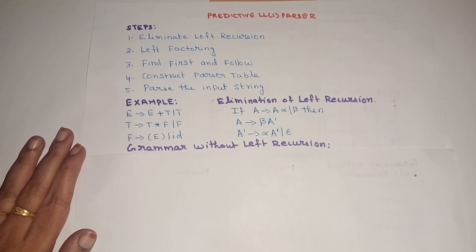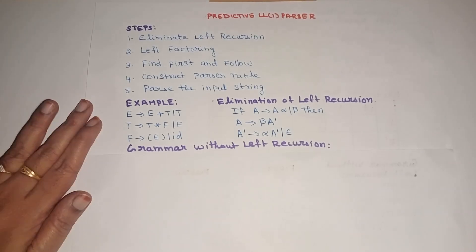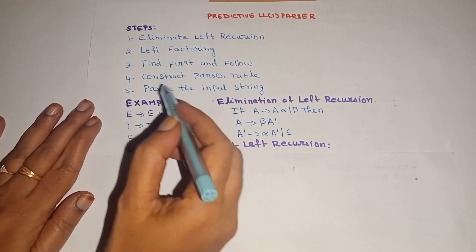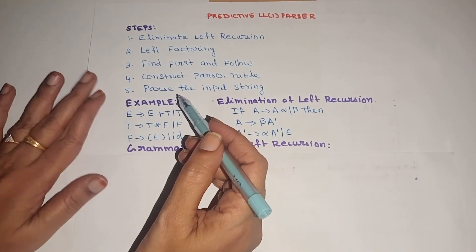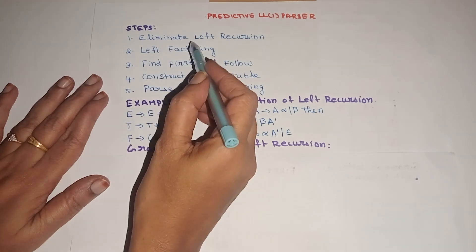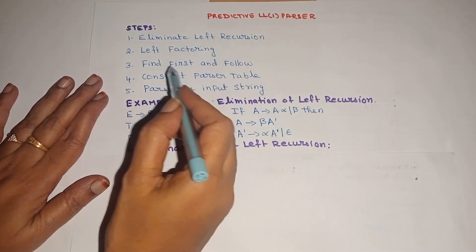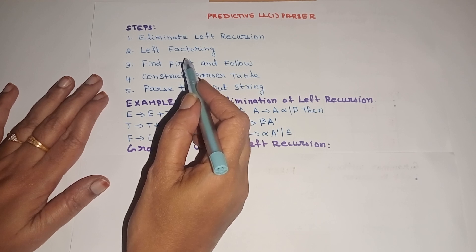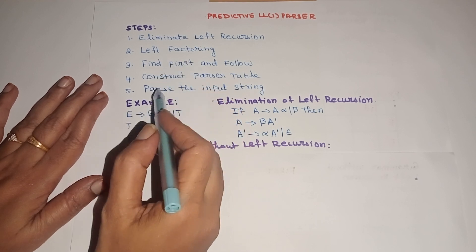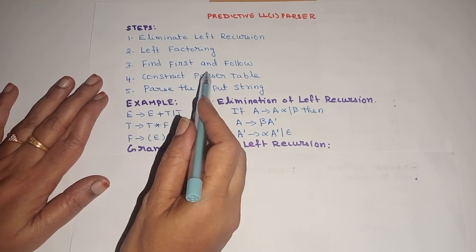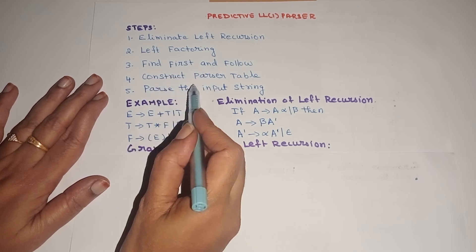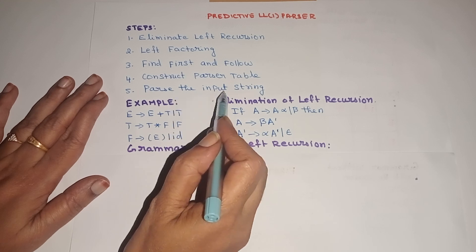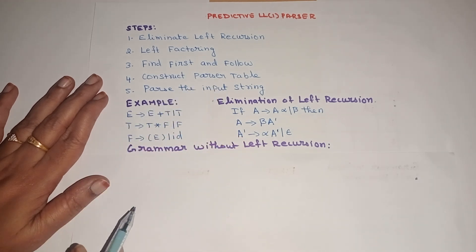Hello everyone. In this lecture, we are going to discuss the topic predictive parser or LL(1) parser in compiler design. There are 5 steps in this parser. First step is to eliminate the left recursion; second step is to apply left factoring if there are common prefixes in the given grammar productions; third step is to find the first and follow; fourth step is to construct the parser table using first and follow; and finally, parse the given input string using the parser table constructed.